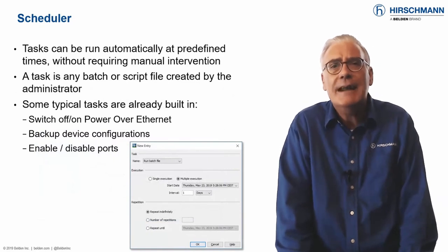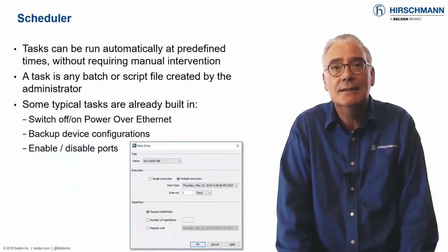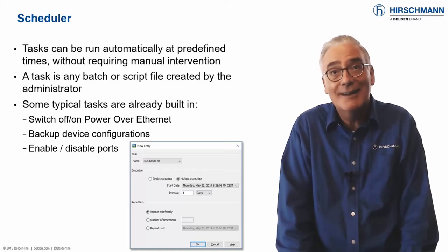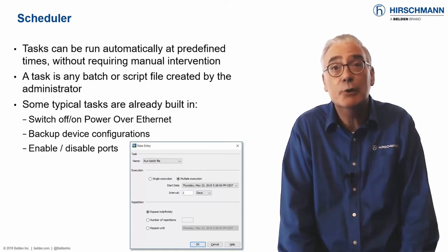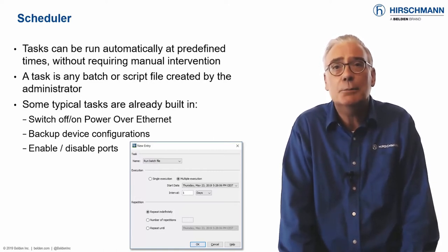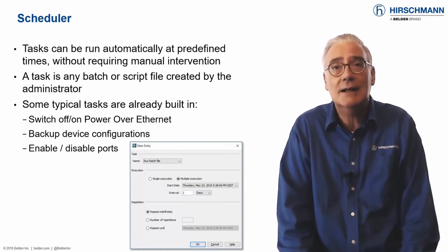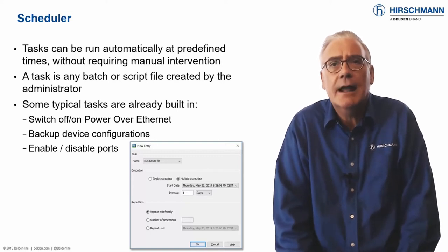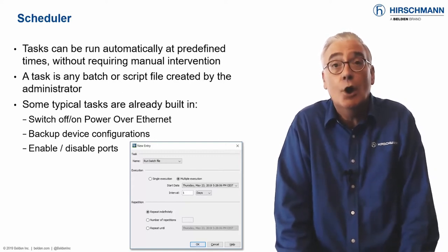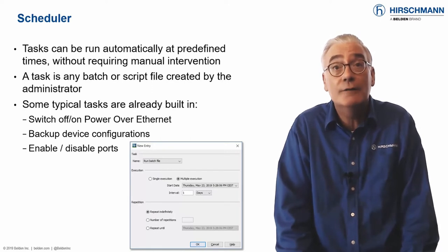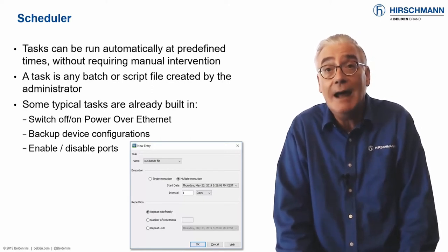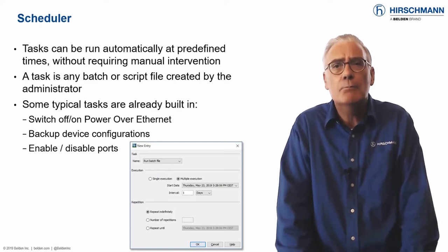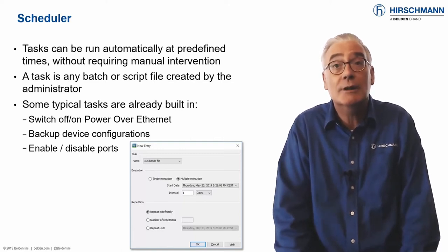In every network, some tasks need to be repeated. This is usually not the most interesting work, but it's often critical to the smooth running of the network. A scheduler takes the pressure off you by automatically running tasks at predefined times. Some tasks like backing up switch configurations, or disabling power over Ethernet outside production hours, are so common that we've built them into Industrial HiVision.